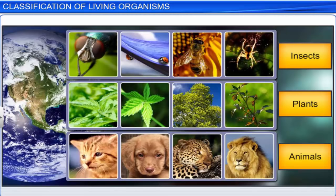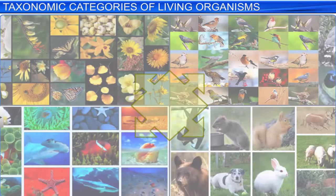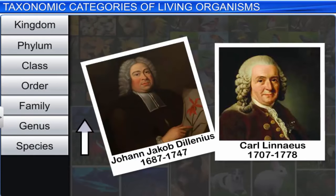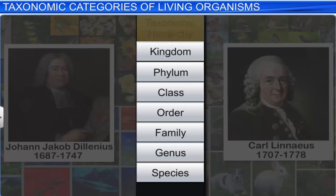Therefore, in this diverse world, it is important to classify and name living organisms for their easy identification and study. Our earth is a habitat of millions of plants and animals, and new species are being discovered every day. In order to group these plants and animals based on observable characters, several taxonomists have classified them in a hierarchical structure that consists of ranks or categories. Every category is referred to as a unit of classification, and is commonly termed as taxon.